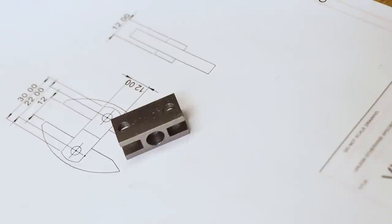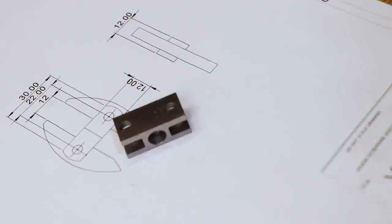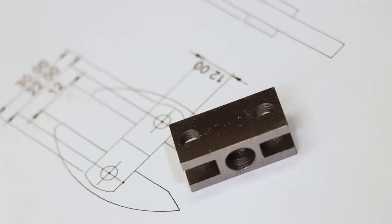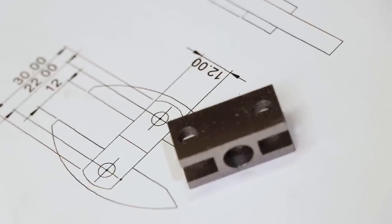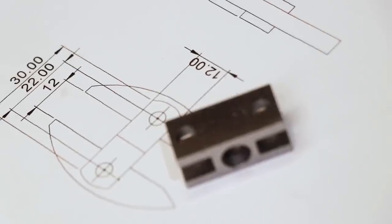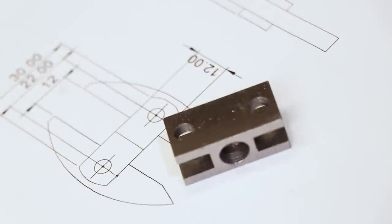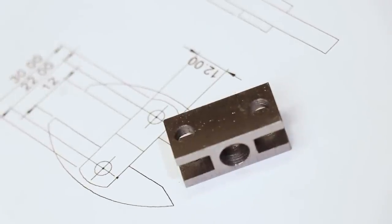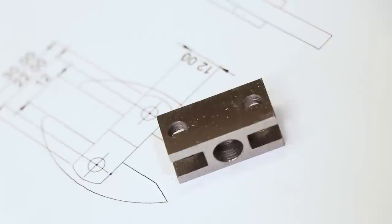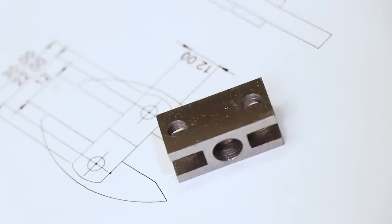Now the plans call for the edges to be slightly rounded. This is more of an aesthetic thing than a functional thing. So I didn't need to do this, but I think it looked a lot nicer. I could do this with a file or I could use the die filer, but I have another idea that I've wanted to do for a long time.